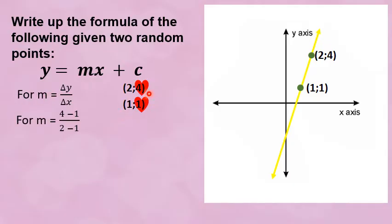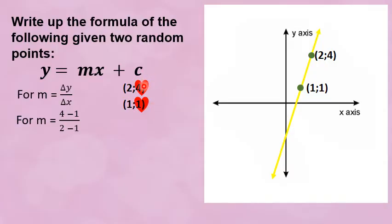I always plot my two points and then highlight the y values so I know it's the change of the y's over the other two. For m, it doesn't matter if you start from the bottom to the top or from the top to the bottom, as long as when you do the change of x you start at the same point you started with for the change of y. So: 4 minus 1 gives you 3, and 2 minus 1 gives you 1. The gradient is 3 — positive, because it's an increasing graph.